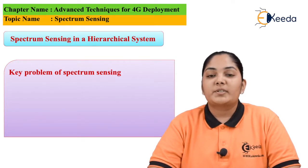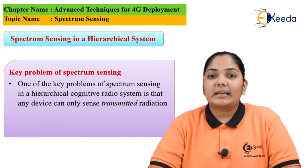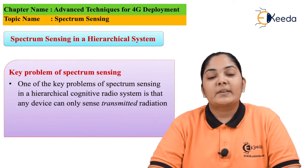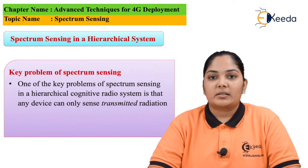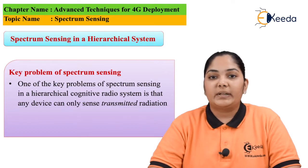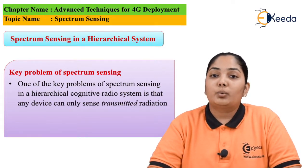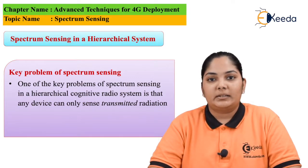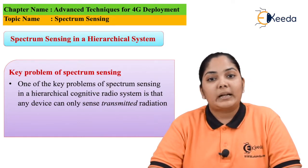Now we will move to the concept of spectrum sensing in the hierarchical system. Spectrum sensing in a hierarchical system means that we have primary users and secondary users, or primary devices and secondary devices. For the secondary devices it is important to sense the spectrum that is freely available. But the problem here is that while sensing, we are only able to sense the transmitted signal — as the antenna is transmitting, the secondary devices are able to identify the frequency being transmitted.